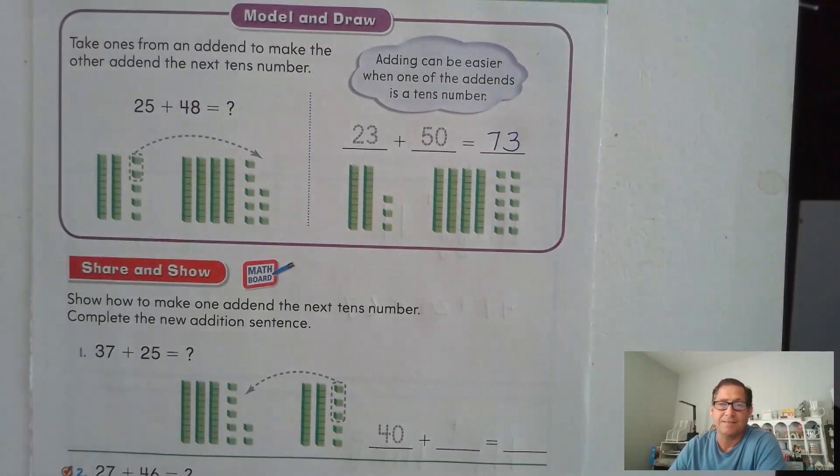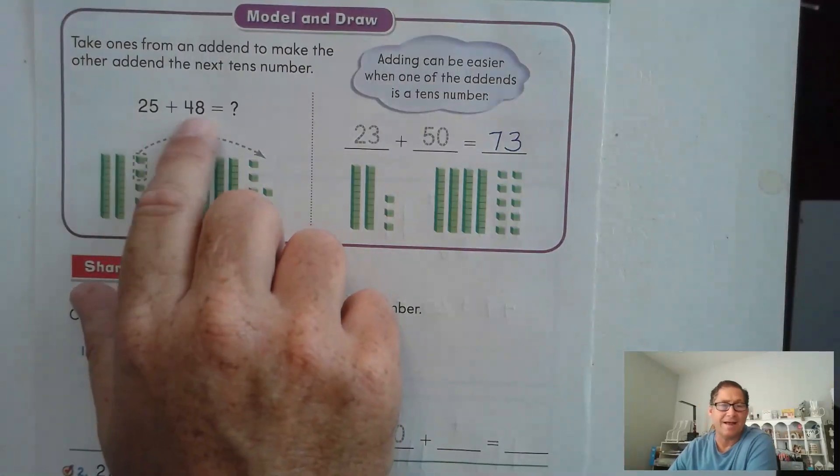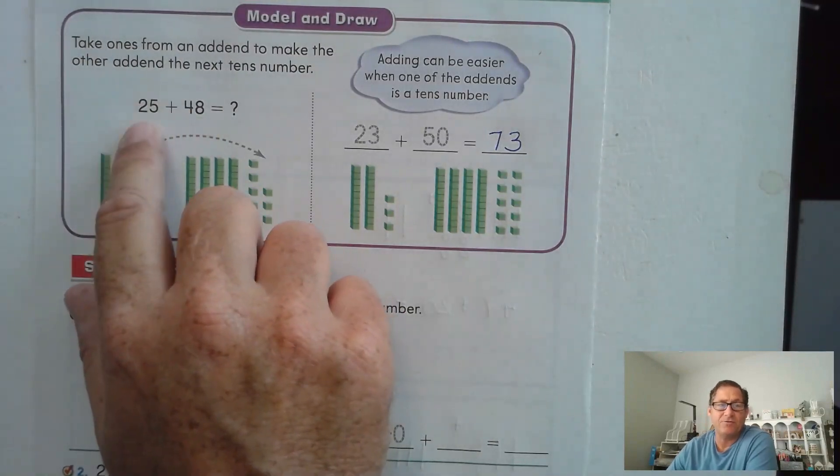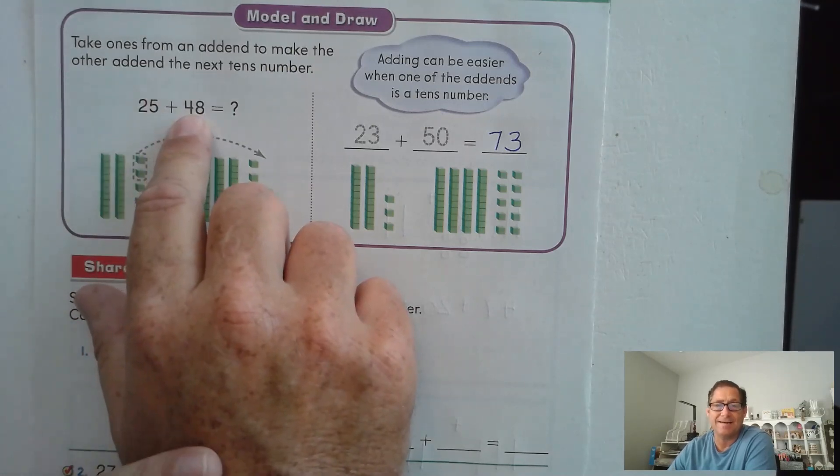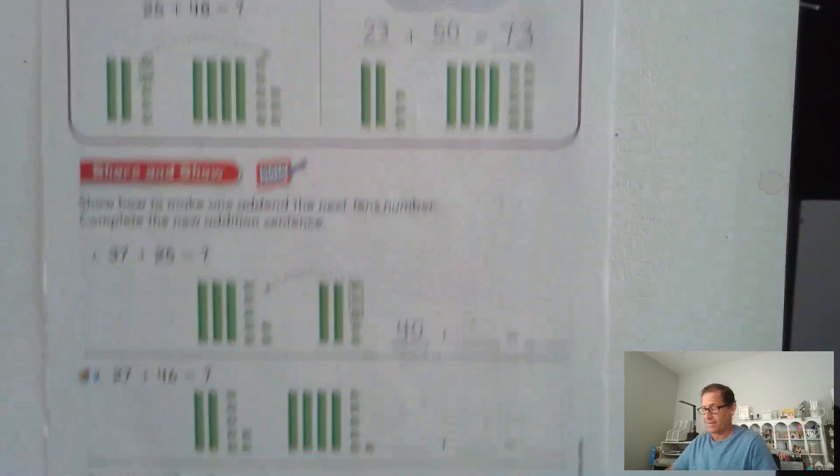And again, adding can be easier when one of the addends is a tens number. So that's what we're doing in this lesson. We're taking one of the addends that is not a 10, taking the ones from the other addend to make the other addend a 10 and then add it. So let's look at this one.